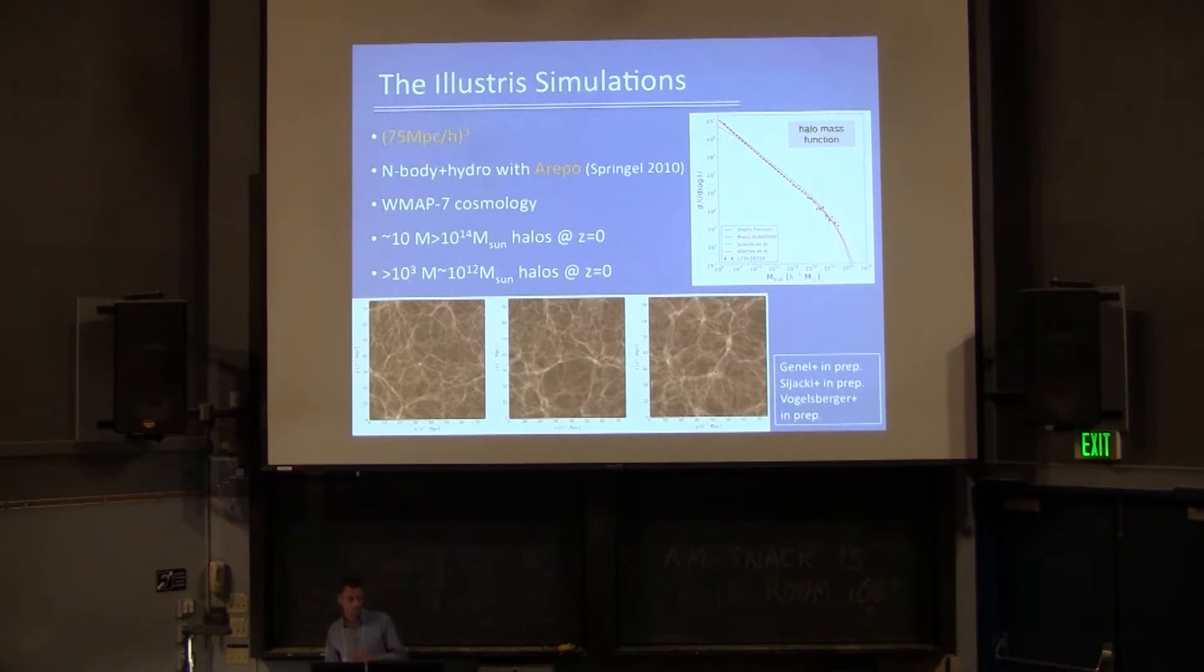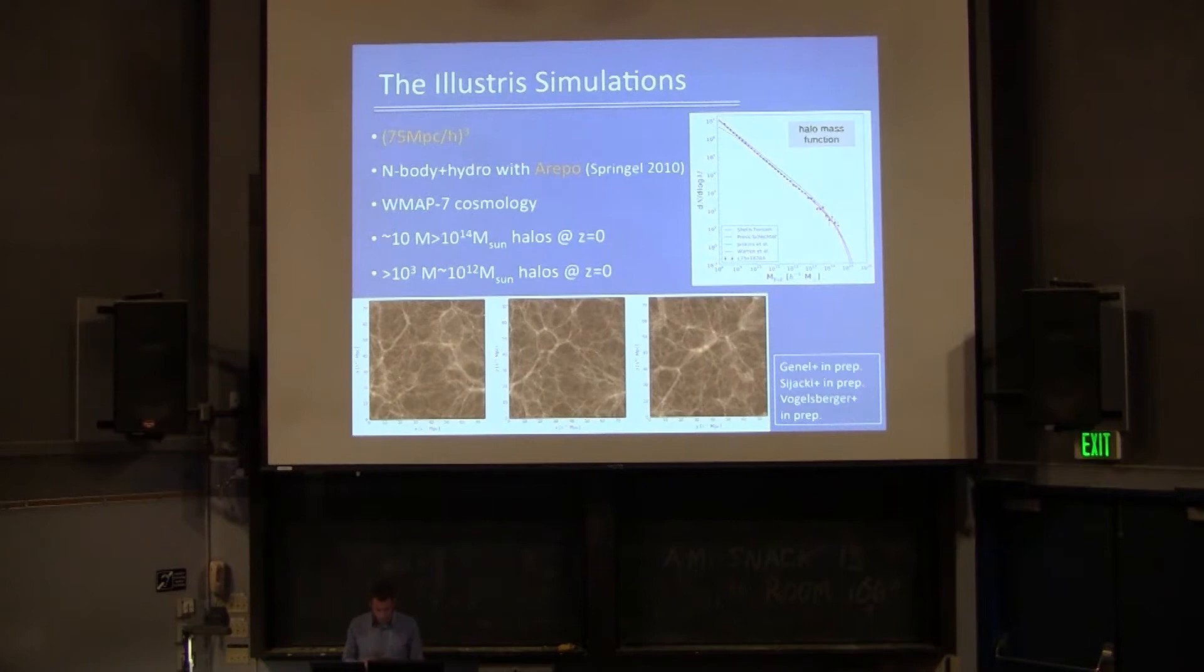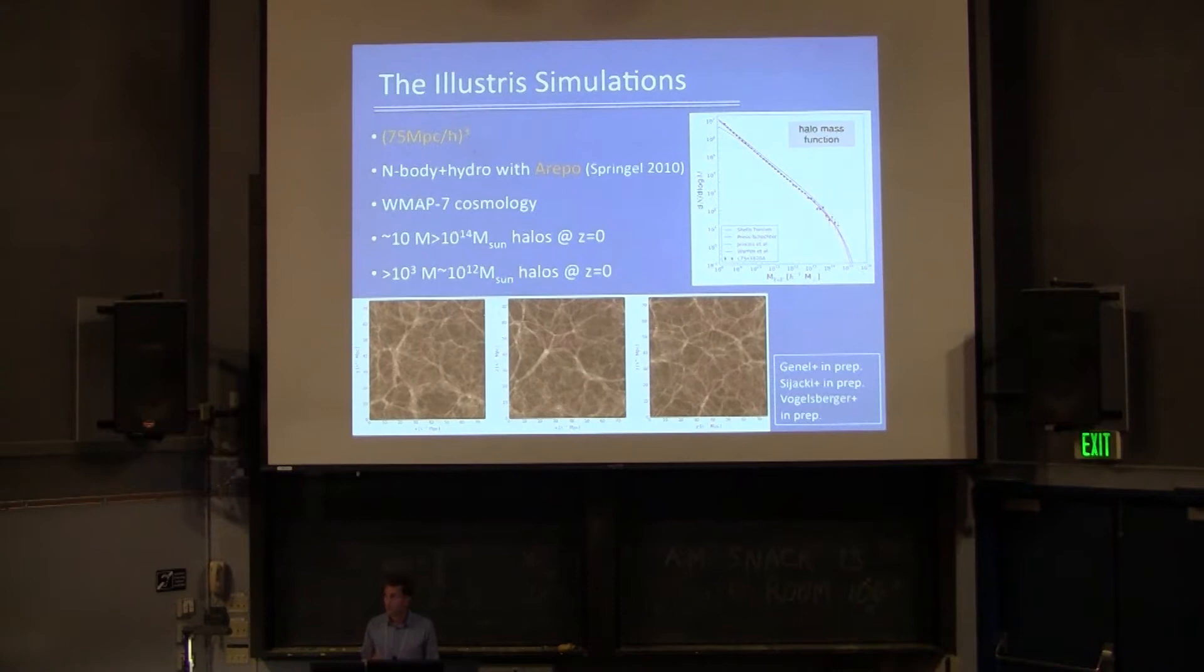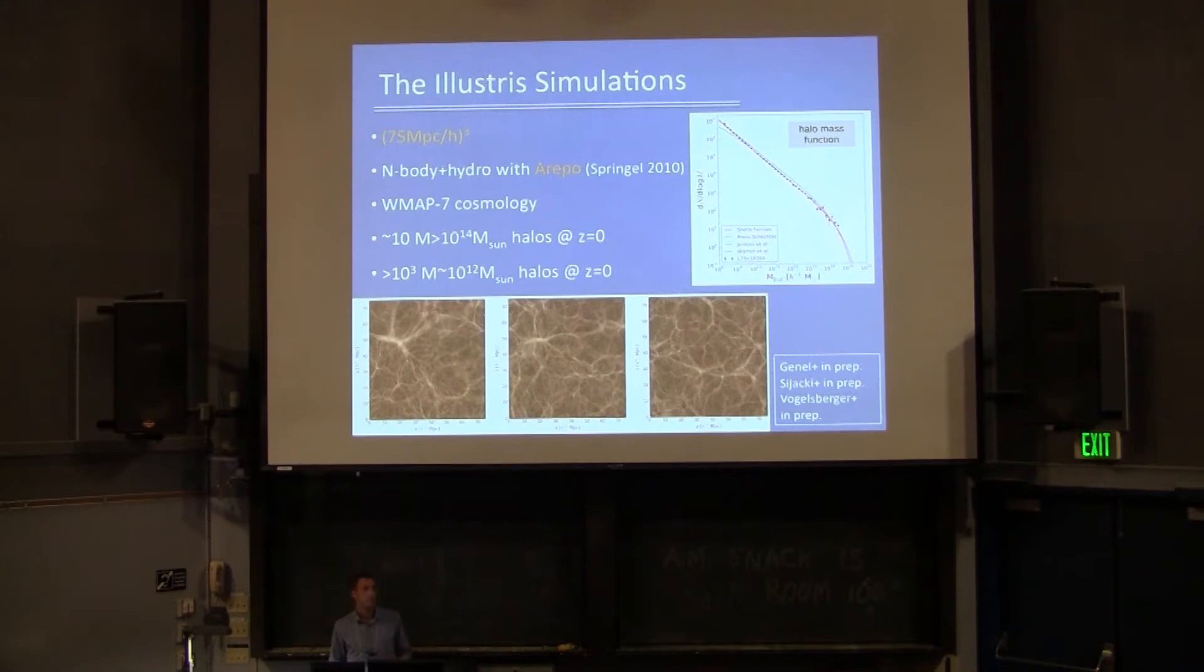So we tried in the Illustris simulations to do some compromise. We simulate a volume of 75 megaparsec cubed with the AREPO code, which is a moving mesh hydrosolver. Choosing this 75 megaparsec cubed volume gives us at redshift 0 around 10 halos more massive than 10 to the 14. So we get to the cluster regime. And a very nice statistical sample of around 1,000 Milky Way-like galaxies.